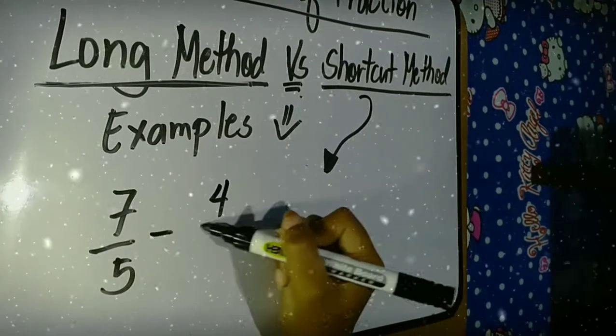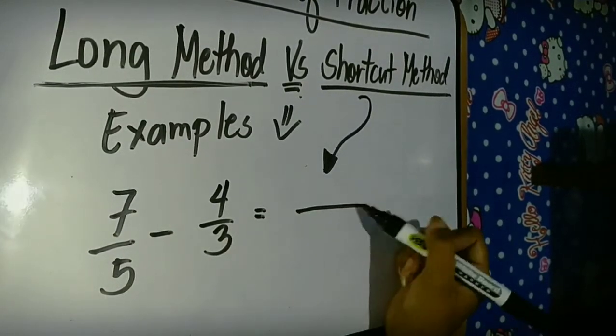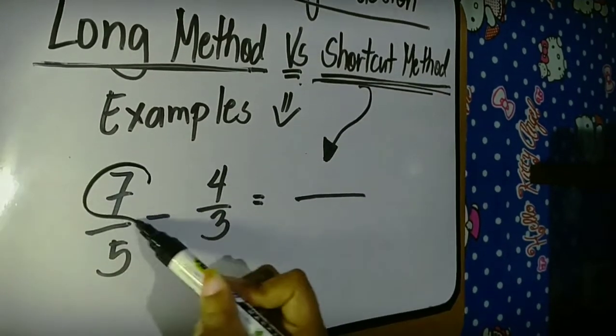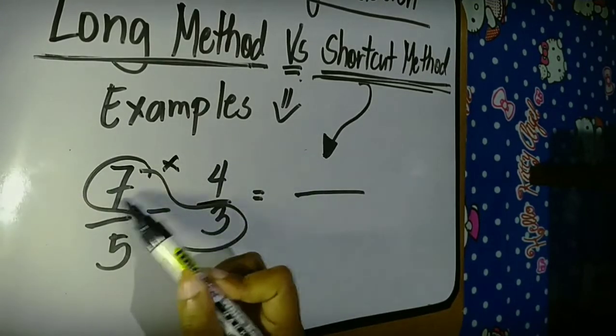7 over 5 or 7 fifth minus 4 thirds or 4 over 3. In the shortcut method, we will just multiply or cross-multiply.